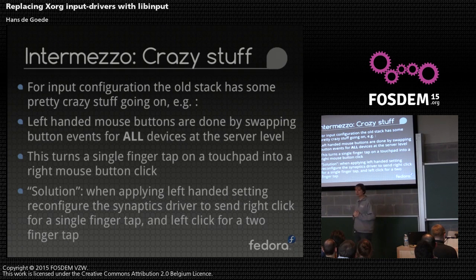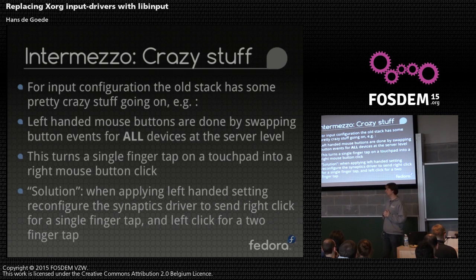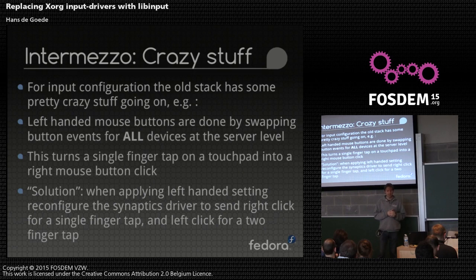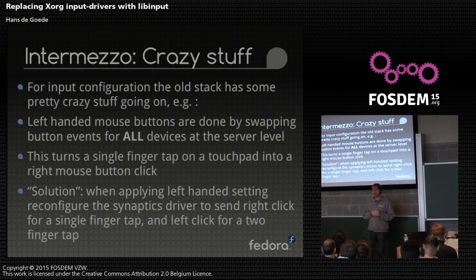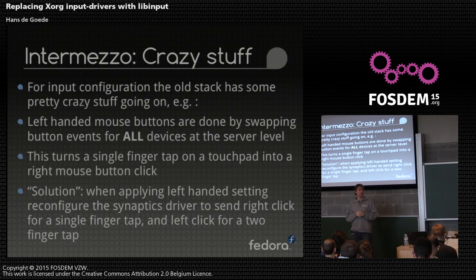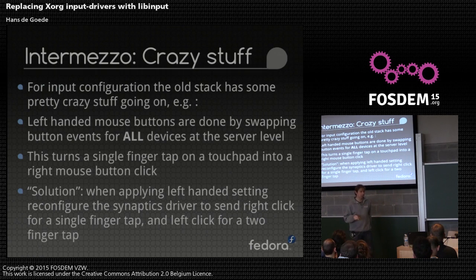First, an intermezzo about something we are going to take away: some configuration options. People always scream when we take away configuration options. We do this because the old stack is made of crazy stuff — there are really some very crazy hacks in there. To give you an idea, the most interesting example is something as simple as saying I want a left-handed button mapping, so I want my left click to be a right click.